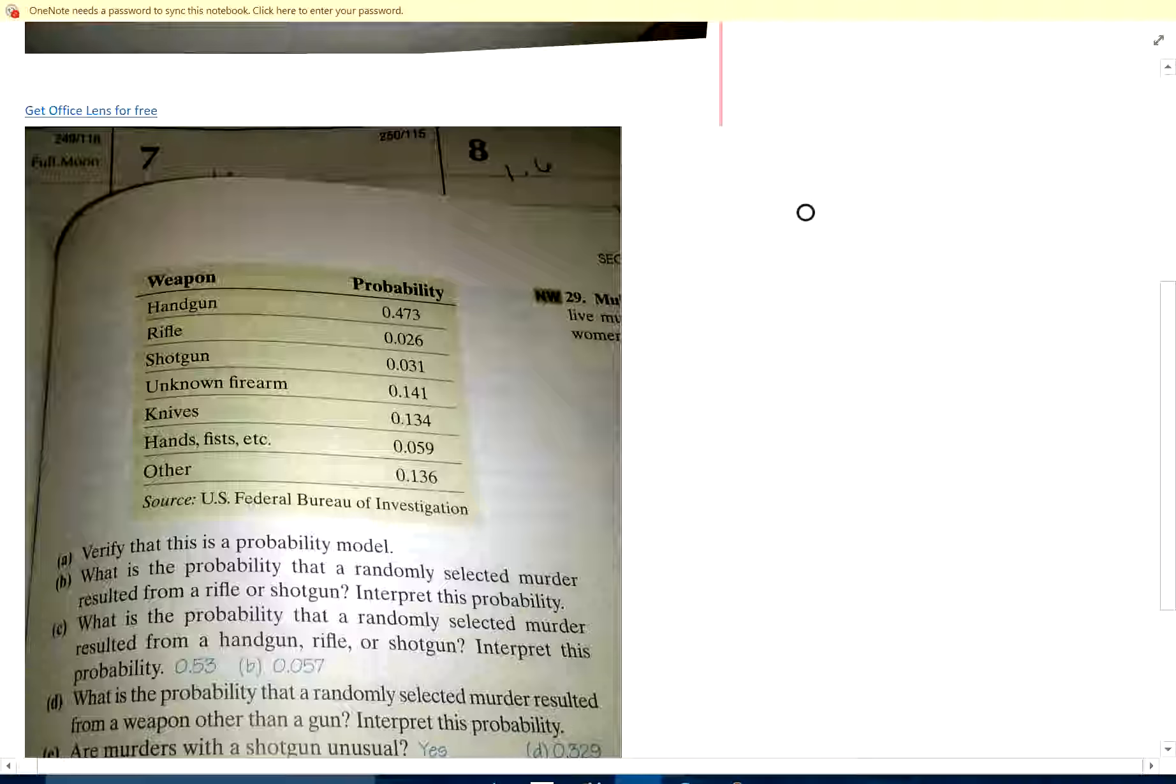25. The following shows murders by type of weapon for murder cases in 2009: handgun, rifle, shotgun, unknown firearm, knives, fists, other.